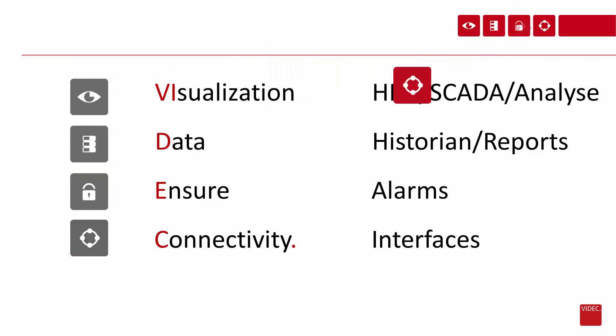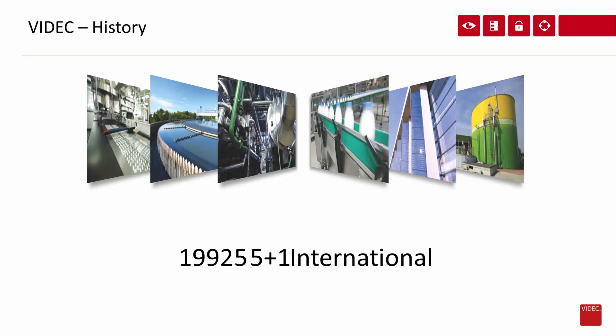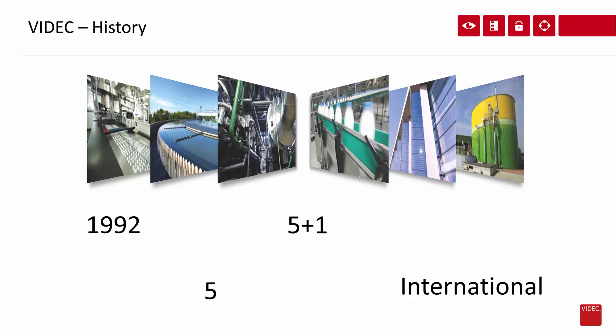All of these icons can be found in our flyers, brochures and presentations to give our customers a quick overview of where they are in our product portfolio. The company was founded in 1992 by five shareholders. Today we have five offices in Germany and one office in Italy. And since 2012, we have expanded our international sales network, as you can see on the next slide.